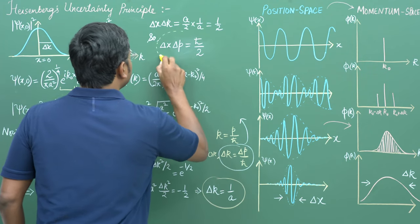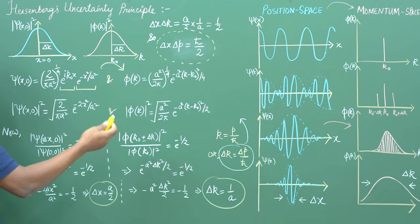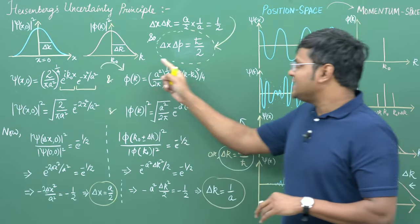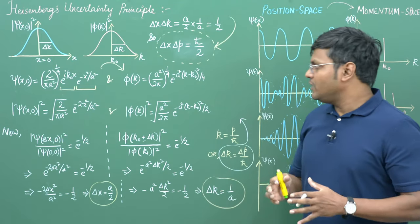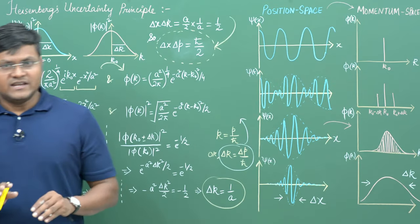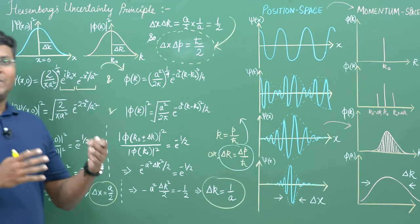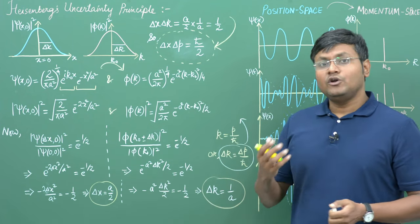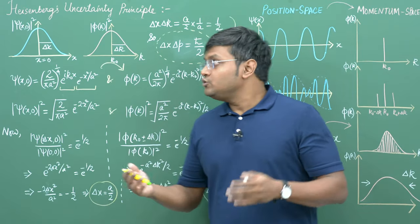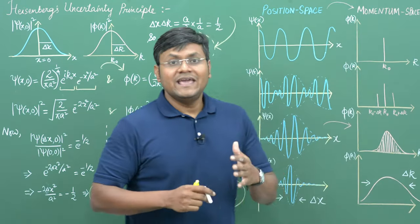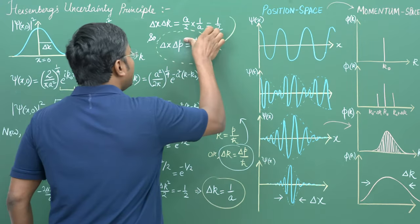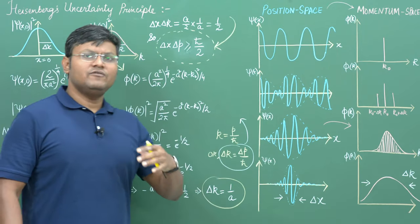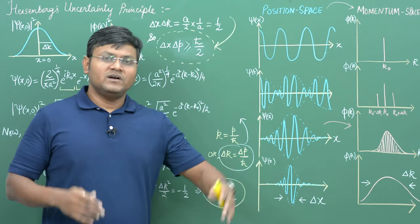This is the Heisenberg uncertainty relation for a Gaussian wave packet. Keep in mind that I have taken a very particular example — the Gaussian wave packet. Because in quantum mechanics when describing particle motion, we tend to deal with Gaussian wave packets as they are the best representation of the particle's motion. The Gaussian wave packet is known as a minimum uncertainty wave packet because it is one of those special cases where we get the theoretically minimum value of uncertainties. For other kinds of wave packets, we get an inequality: Δx · Δp ≥ ħ/2, with uncertainties only increasing.